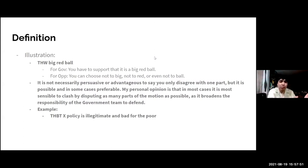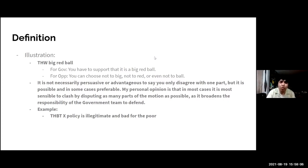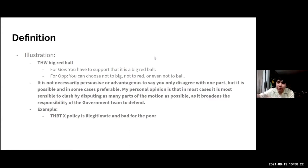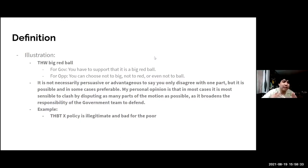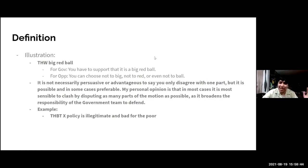Let's analyze the truth value of a statement. Say the motion is 'This house would big red ball.' For government you have to support that it is a big red ball. Opposition simply has to not support the policy — they can contradict the entire statement, or split 'big red ball' into sub-statements: it is big, it is red, it is a ball. If you only contradict one, the entire statement is still untrue. So you can say it's red and a ball but not big, or it's not red but big and a ball.